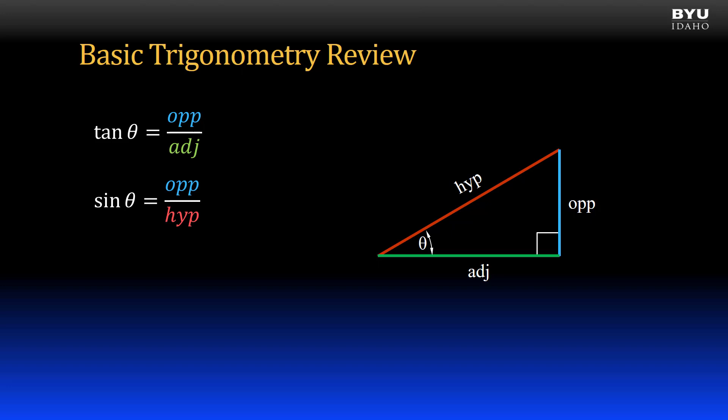The sine of theta is the ratio of the opposite side length to the hypotenuse length. And the cosine of theta is the ratio of the adjacent side length to the hypotenuse length. Also, the Pythagorean theorem can be used to find lengths of one side if the other two sides are known.